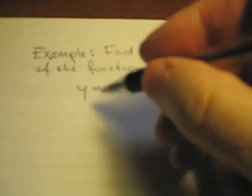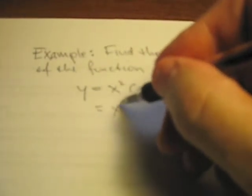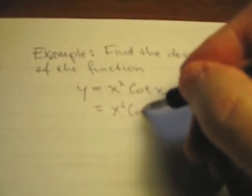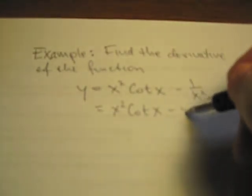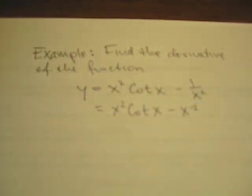The first step we're going to do here is to change the 1 over x squared to a negative exponent. So we have x squared cotangent x minus x to the negative 2.